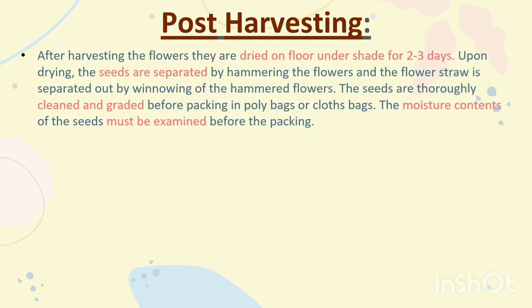Post Harvesting. After harvesting, the flowers are dried on the floor under shade for 2–3 days. Upon drying, the seeds are separated by threshing the flowers and the flower straw is separated out by winnowing. The seeds are thoroughly cleaned and graded before packing in poly bags. The moisture content of the seeds must be examined before packing.